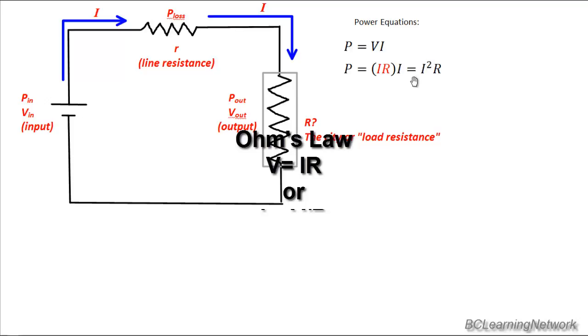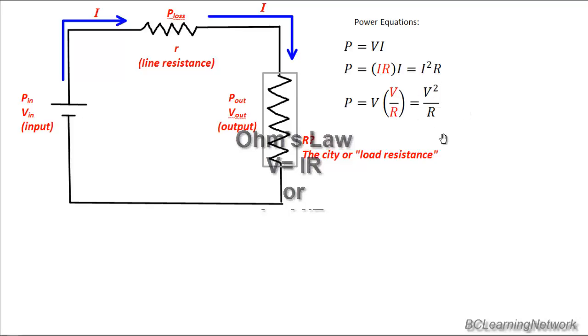And a third and final way we can solve for power is to sub in for I in our original equation. And using Ohm's law, I is V over R. So let's see what we get. So sub in for I is V over R, I get V times V over R, or V squared over R is my final power equation. Now, we just have to decide which one is appropriate for this given question.